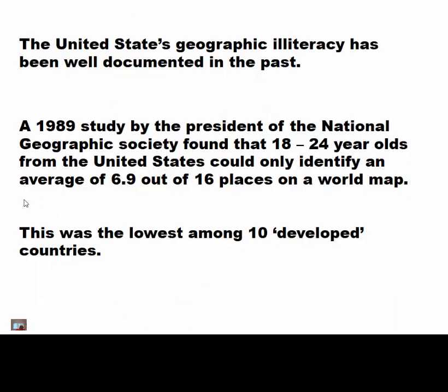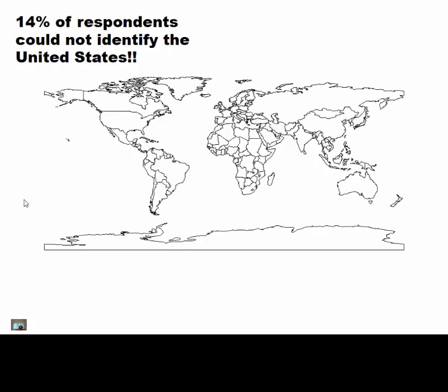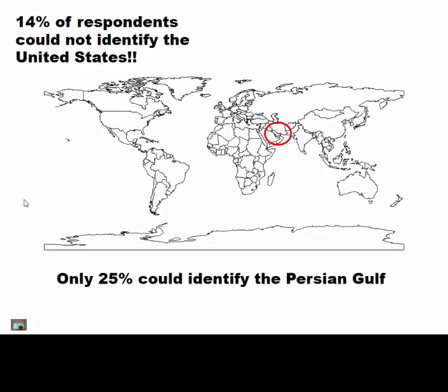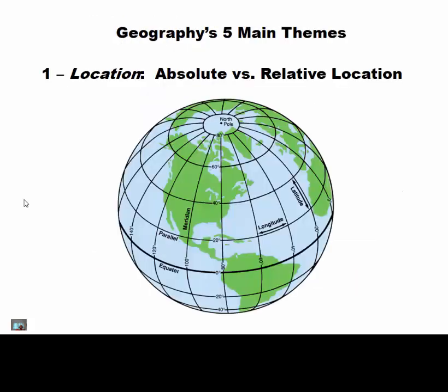In the United States, geographic illiteracy is well documented. There's an old study, almost 30 years old, showing that many Americans couldn't identify the United States on a particular map. In other places like Sweden, Japan, New Zealand, or the Persian Gulf region, geographic literacy tends to be much higher.